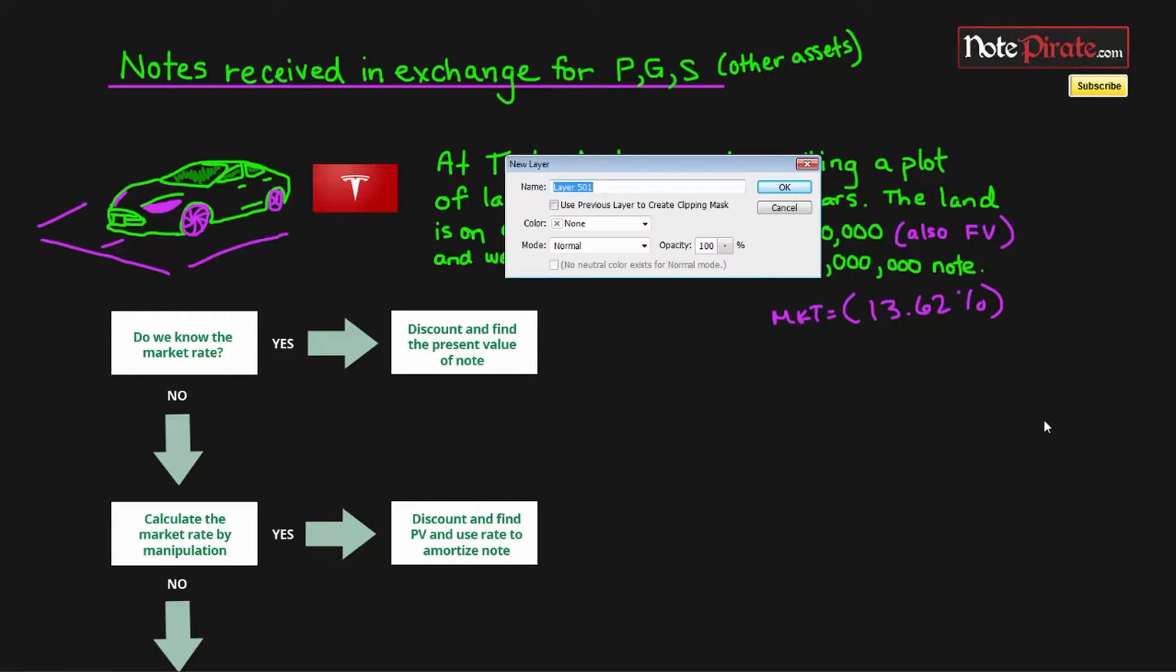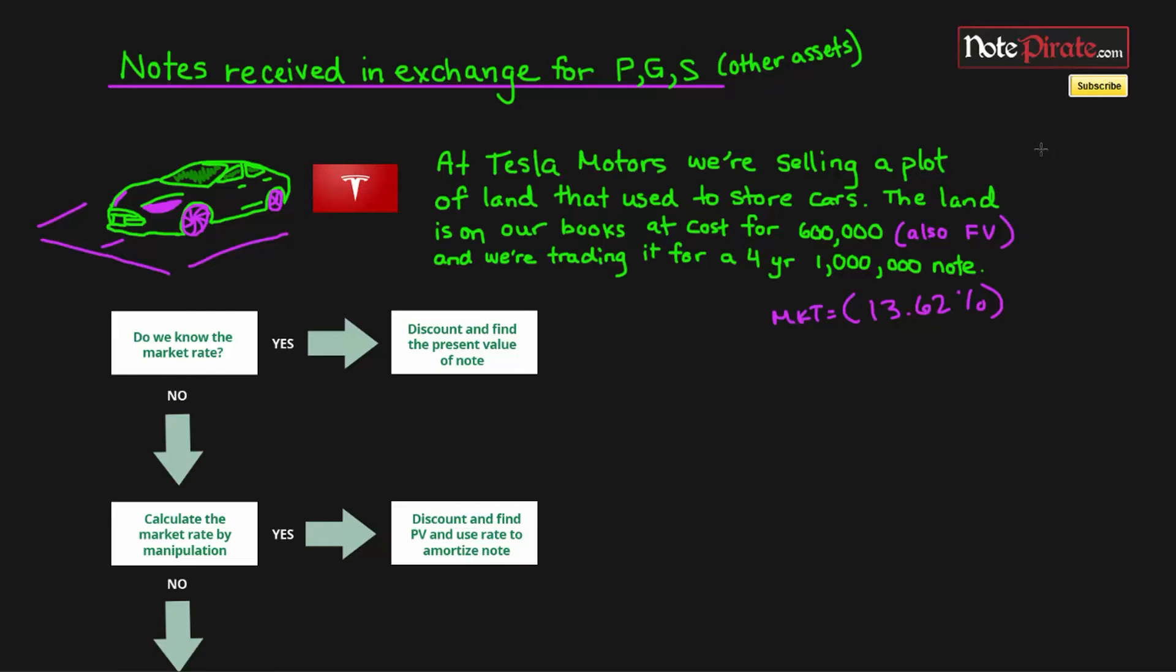If we take the face value of one million dollars and divide it by 1.1362, which is the rate, to the power of four, because that's four terms, we're going to get a present value which is very similar to the $600,000 cost. Since the cost is a much more reliable figure, we might as well use that, and we also have to use it to de-recognize that amount on our books.